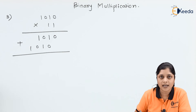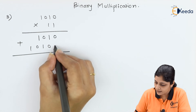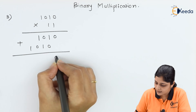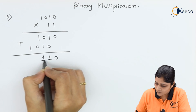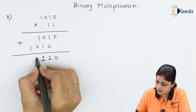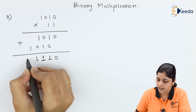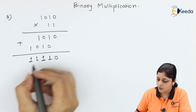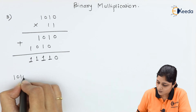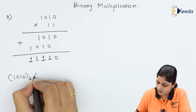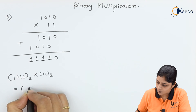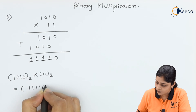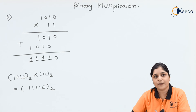Perform binary addition: 0 as it is, 1 plus 0 is 1, 0 plus 1 is 1, 1 plus 0 is 1, and 1 as it is. So finally, 1010 base 2 multiplied by 11 base 2 equals 11110 base 2. This is how you perform binary multiplication.